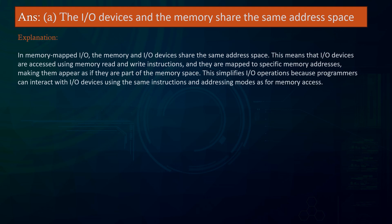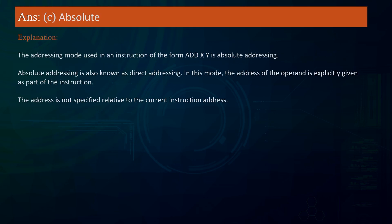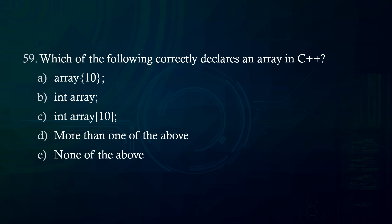What is the addressing mode used in an instruction of the form ADXY? A. Indirect B. Index C. Absolute D. More than one of the above E. None of the above. Answer: Absolute. Explanation: The addressing mode used in an instruction of the form ADXY is Absolute Addressing, also known as Direct Addressing. In this mode, the address of the operand is explicitly given as part of the instruction. The address is not specified relative to the current instruction address.